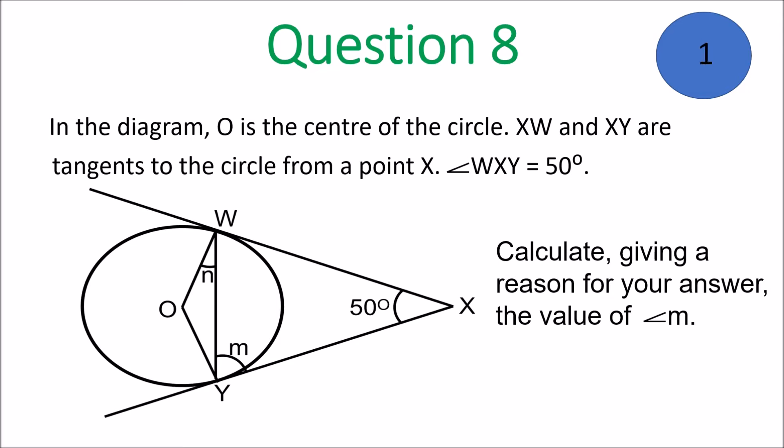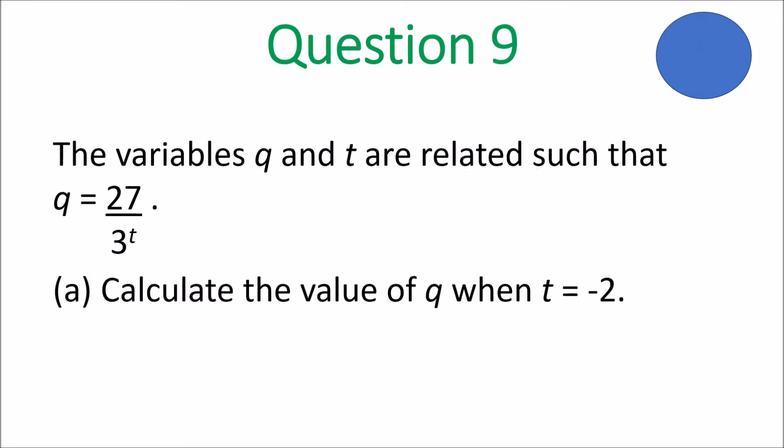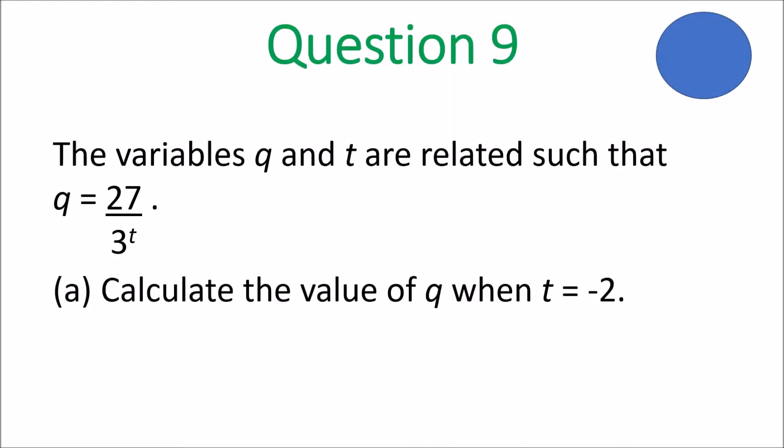You should be finishing off question 8. Now we move on to question 9. The variables Q and T are related such that Q equals 27 all over 3 to the power of T. Part a: calculate the value of Q when T is equal to negative 2. Part b: calculate the value of T.